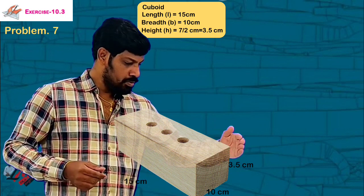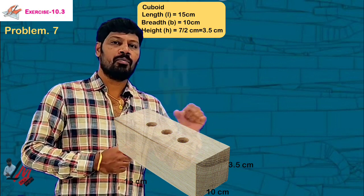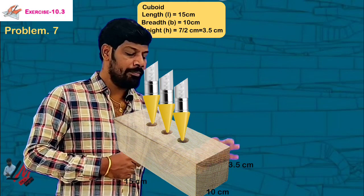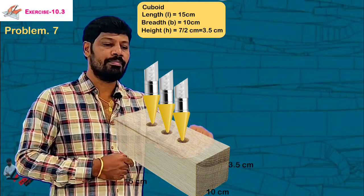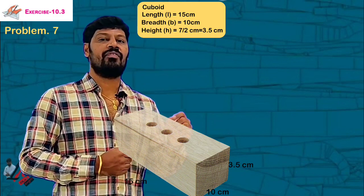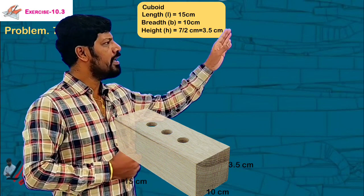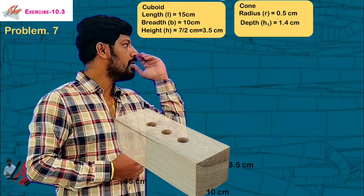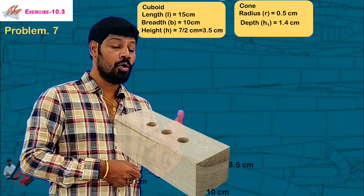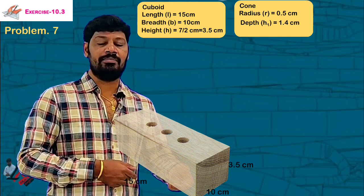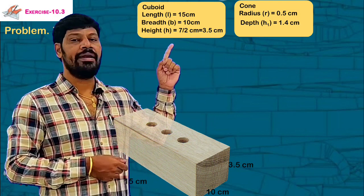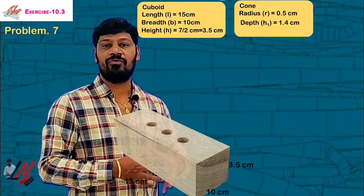But that's not all. This is a wooden cuboid — a pen stand — with conical depressions. Each hole is cone-shaped, with a radius of 0.5 cm (that is, 1 by 2 cm). The depth, which is the height of the cone, is 1.4 cm.